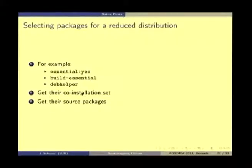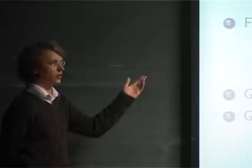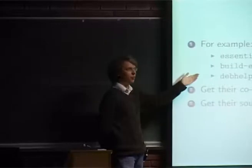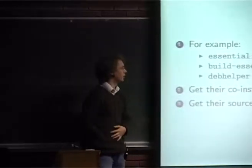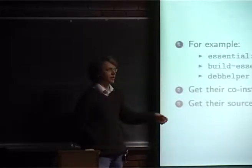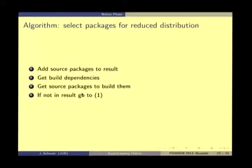We go through the same steps as for the cross phase. Starting from the minimal native build system, we select packages we want available in our native system — you can put anything there, like a full GNOME desktop or KDE. We get their co-installation set and source packages, then execute the same iterative algorithm: add source packages to the result, get their build dependencies, get the source packages to build those dependencies, and if the new source packages aren't in the result yet, repeat the whole process.